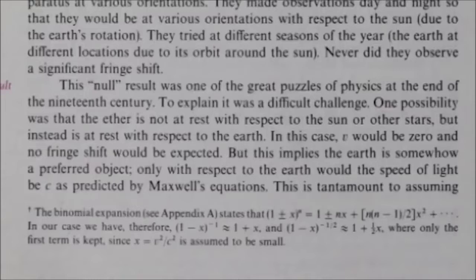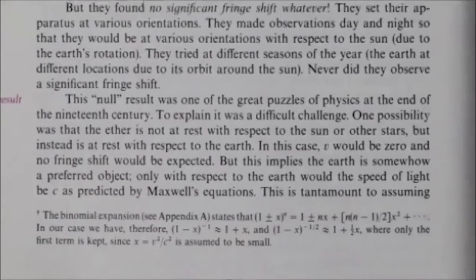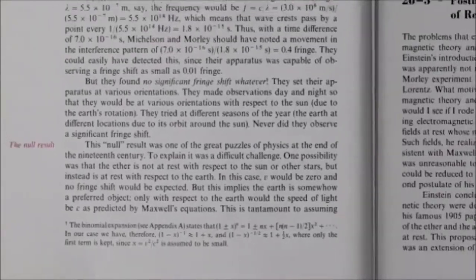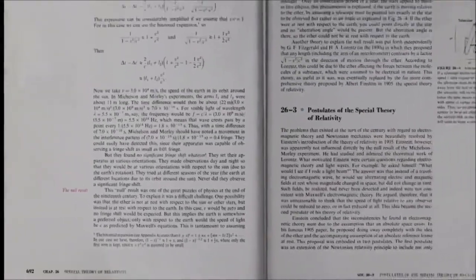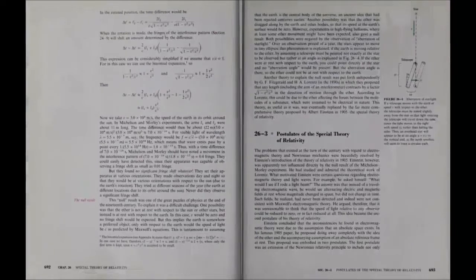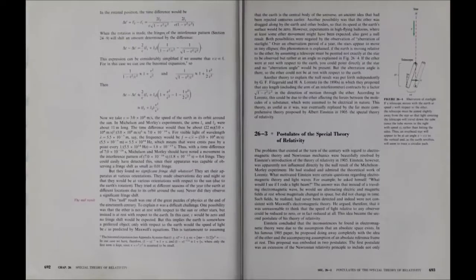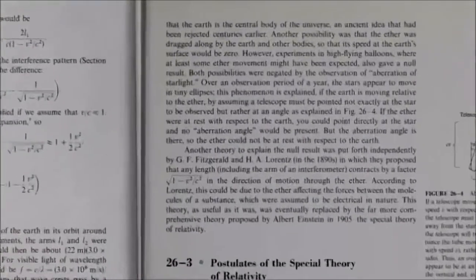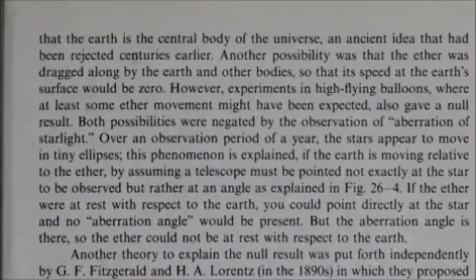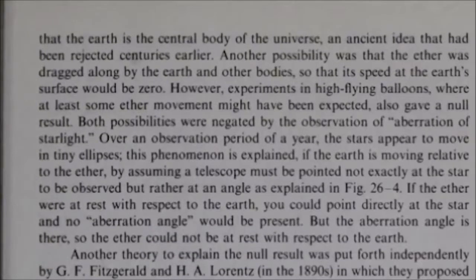This null result was one of the greatest puzzles of physics at the end of the 19th century. One possibility was that velocity would be zero and no fringe shift would be expected. But this implies that the earth is somehow a preferred object. Only with respect to the earth would the speed of light be c as predicted by Maxwell's equations. This is tantamount to assuming that the earth is the central body of the universe. Douglas C. Giancoli.